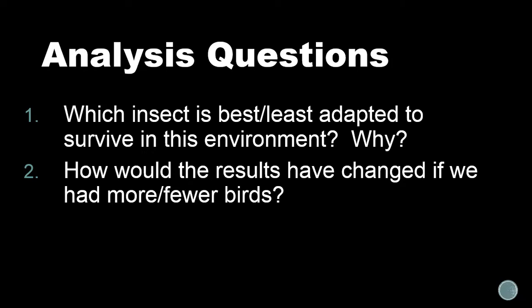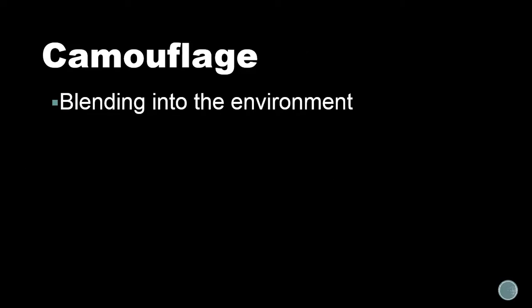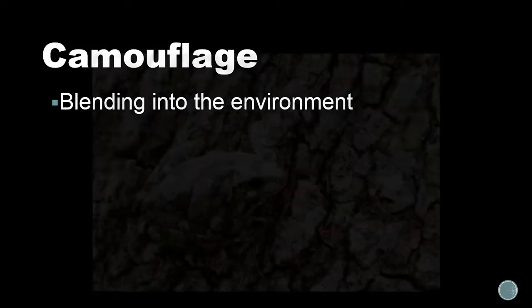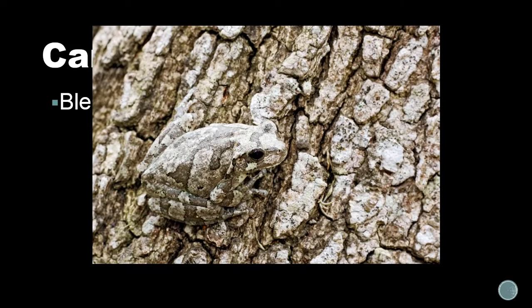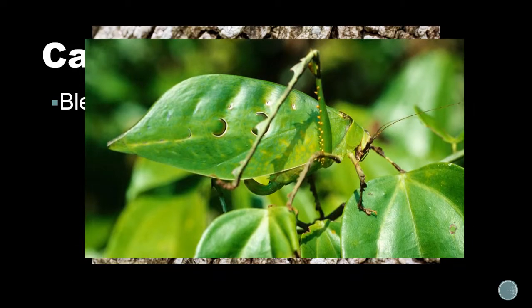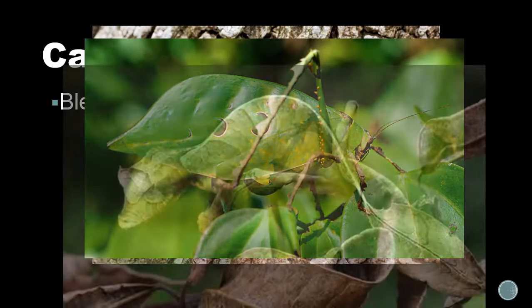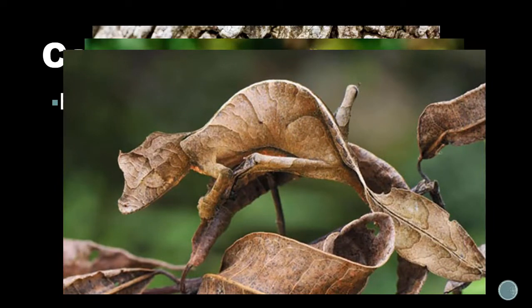A couple of interesting things popped up during this lab. First of all, the word camouflage — that's probably your answer to why the blue ones didn't survive and the natural and green ones survived longer anyway. Camouflage is the blending into the environment. Here are some examples: a frog on a tree, a leaf bug that looks just like a leaf, and a leaf-tailed gecko.